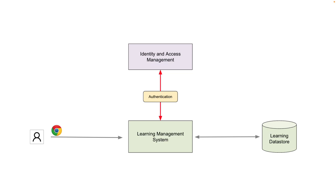On the left side you see the browser and the user who's actually using the system. This is a very simple system. At this point there is no OAuth, no OpenID Connect. There is a red arrow — that's authentication. That's where the authentication of the user is happening. It's very clear.